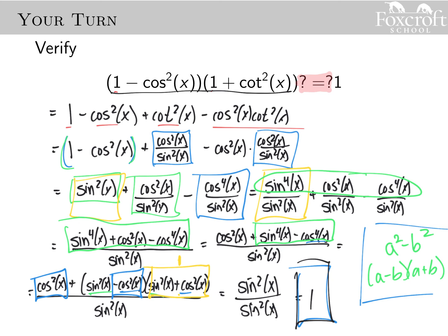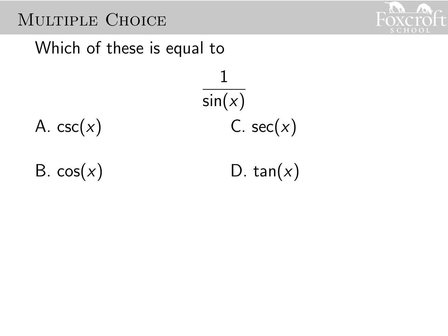Verifying trig identities is really the key to the next level of mathematics. You're using a lot of different algebraic properties and trig identities, and you're not treating it like an equation — so you're not multiplying both sides by something. You're only seeing where you can go next without any clear direction, and eventually you want to change one side into the other. As a quick recap: which of these is equal to one over sine of x? This type of thing is going to come up a lot when you're verifying trig identities.